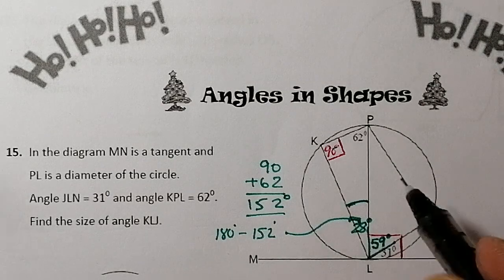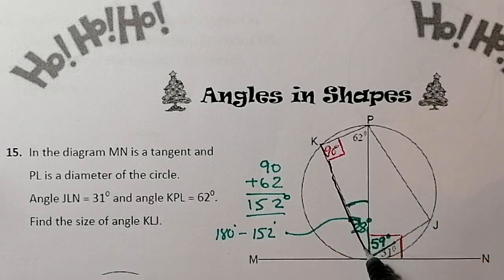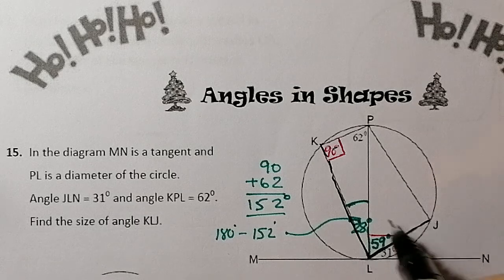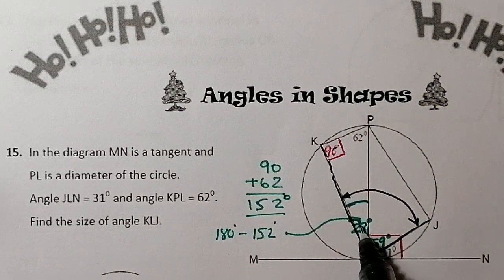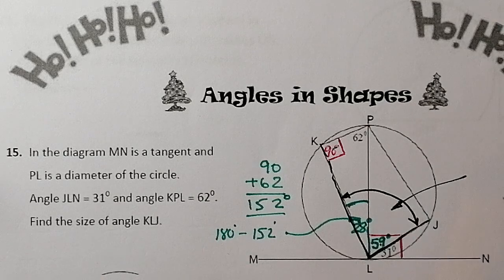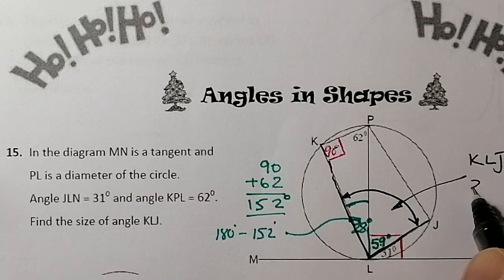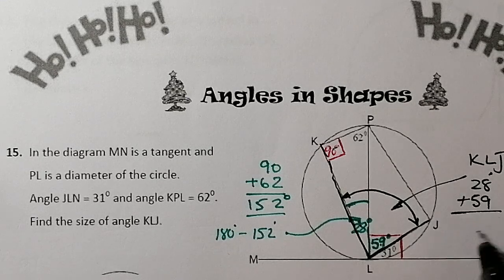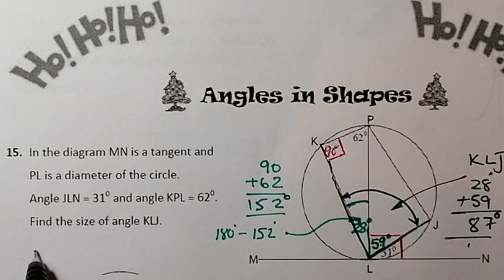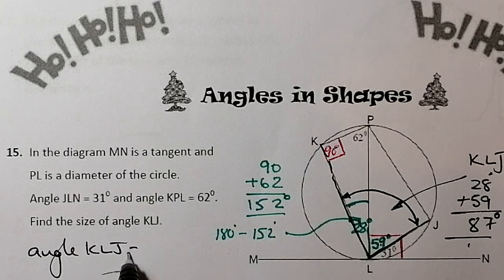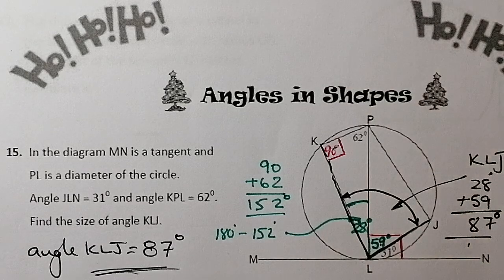Remember what I've been asked to do — find angle KLJ, from K all the way down from L and out to J. So it's this angle here that I'm interested in — how far that's opened up. I've got two angles to add together. So to get the angle KLJ, I'm going to add 28 plus 59, and that gives me 87 degrees. So angle KLJ is equal to 87 degrees. That's that complete.